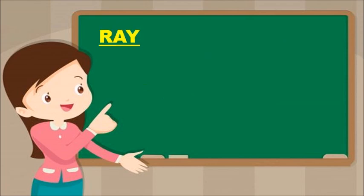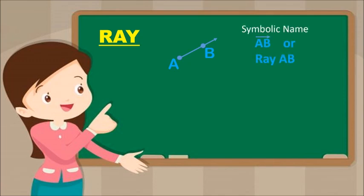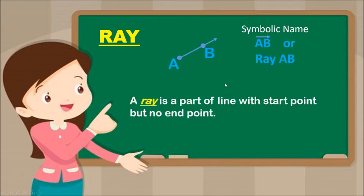Next is Ray. As you can see in the picture, one side has an arrow. The symbolic name is Ray AB, or AB with a ray symbol on top. A ray is a part of a line with a start point but no end point.